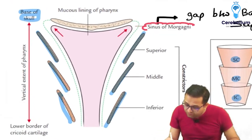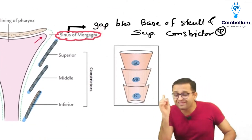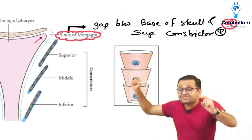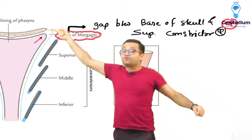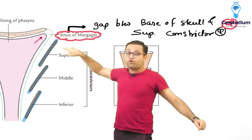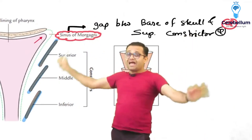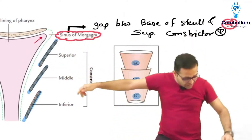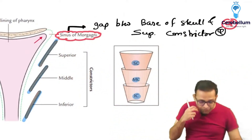The space between the base of the skull and the superior constrictor is known as the sinus of Morgagni. This is a very important MCQ question: the space between the base of the skull and the superior constrictor muscle is known as the sinus of Morgagni. Don't forget — it is very important.